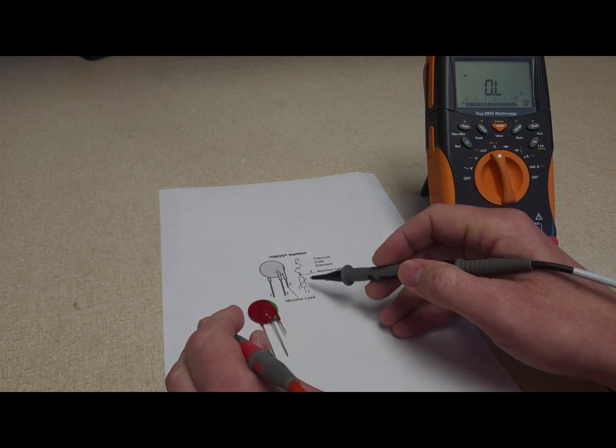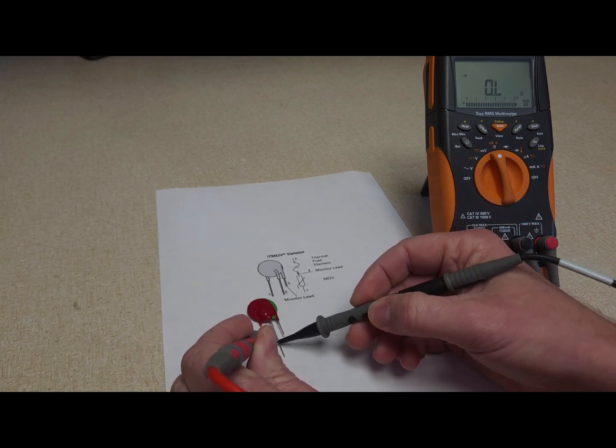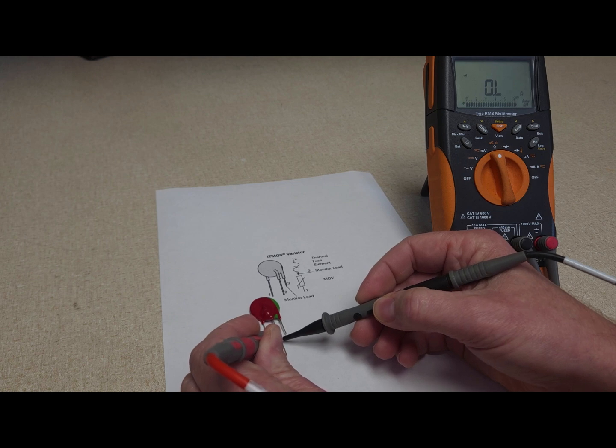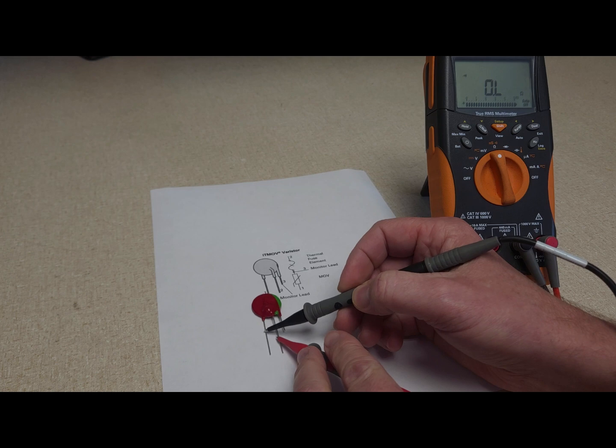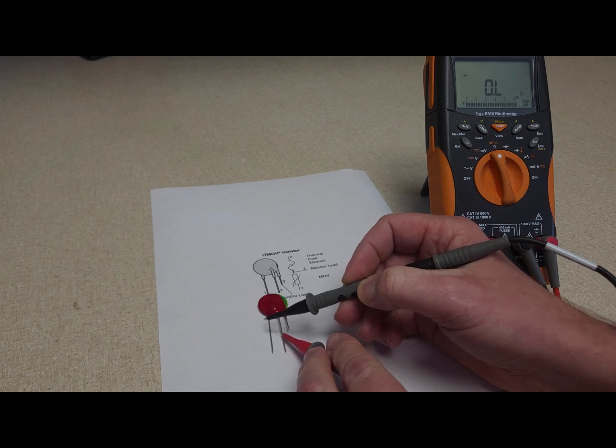To test across the MOV we'll go to legs one and two, right here and here, and I should expect nothing and sure enough I get nothing. Now I'm going to switch the leads as well to verify that I've got nothing in the diode function the other way.